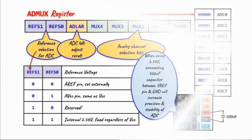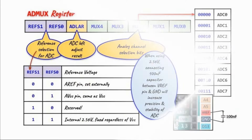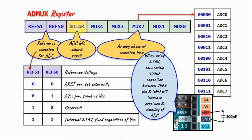When using the internal 2.56 volt V reference, it is highly recommended to connect a 100 nanofarad capacitor between the analog reference pin and ground. This will increase the precision and stability of the ATD converter. The ADLAR bit is the ADC left adjust result bit: a value of 1 means the 10-bit result will be left justified inside the 16-bit register, while a value of 0 means the result will be right justified.